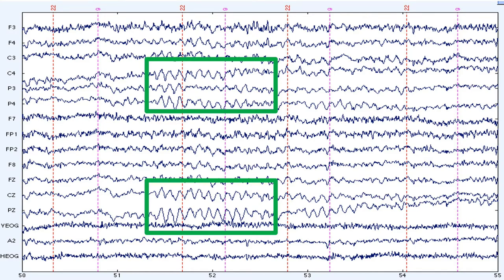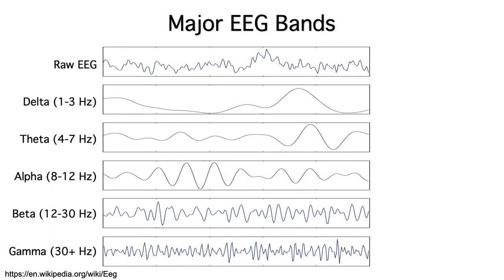Over time, researchers discovered that the EEG contains oscillations in several different frequency bands, which are known as the alpha, beta, gamma, theta, and delta bands.